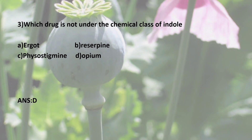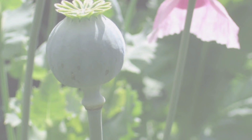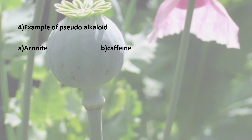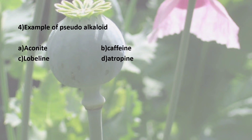Fourth question: Example of Pseudo Alkaloid. Options are: A) Aconite, B) Caffeine, C) Lobeline, D) Atropine. The correct answer is A — Aconite is an example of a Pseudo Alkaloid.